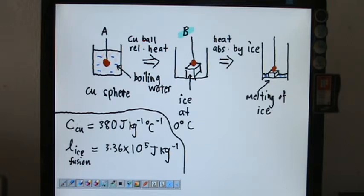And the value of the copper specific heat capacity is 380 joules per kg per Celsius degree. And specific latent heat of fusion of ice, meaning the ice transformed into liquid, is 3.36 times 10^5 joules per kg.